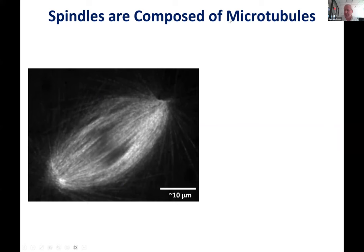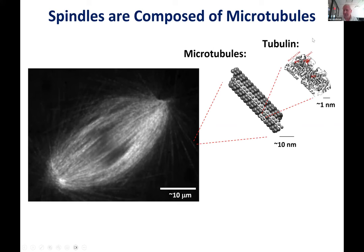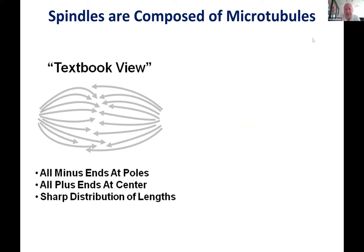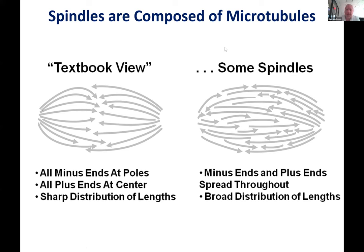Spindles are primarily composed of microtubules, which are in turn composed of the protein tubulin. Some spindles can contain up to a hundred thousand microtubules. A textbook picture of a spindle often implies that all microtubules have their minus ends at the pole and plus ends near the center, with a sharp length distribution. But for many spindles in animals, a more faithful cartoon shows minus ends and plus ends spread throughout the spindle, with a very broad distribution of lengths — like a sea of little microtubules.